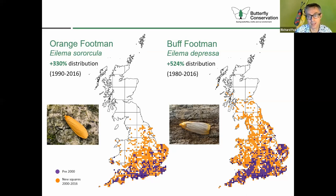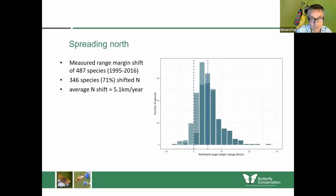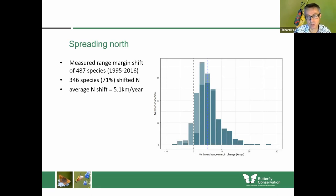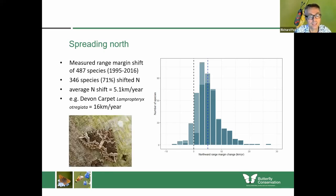Many of the footman moths have been doing very well in Britain, and they continue to do so. Orange footman and buff footman show very rapid and extensive northward spread — this is probably at least in part due to improved air quality and the increase in lichens, as the caterpillars of these species feed on lichens, though climate change is likely a factor too. When we look at the distributions of larger moths that reach the northern edge of their European range within Britain, we find that the vast majority have shifted northwards. In a 20-year analysis, 71% of species with the potential to move northwards had shifted significantly northwards, with an average change of around five kilometres per year — pretty impressive.